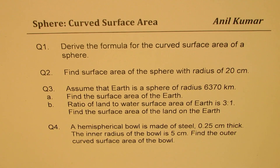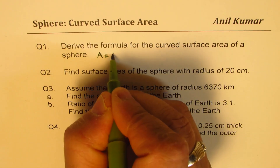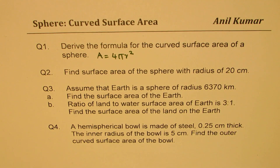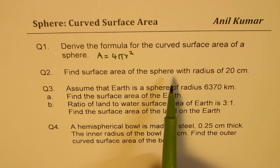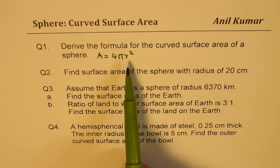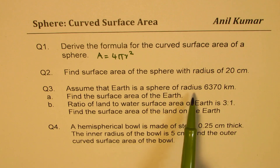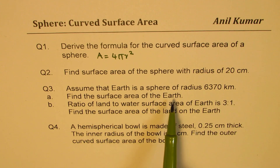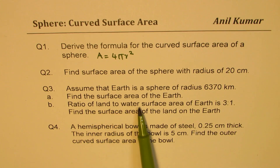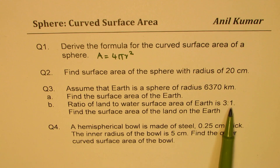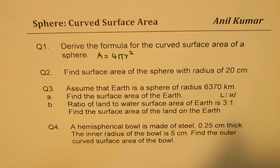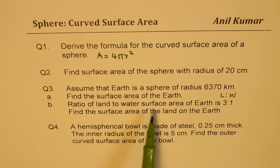The area is 4πr², we know that, but how do we derive it? That is the first question. Question number two: find the surface area of a sphere with radius 20 centimeters — if we are given the radius it is very easy to find the area. Question three: assume that Earth is a sphere of radius 6370 kilometers, find the surface area of the Earth, and also find the ratio of land to water surface area, which is 3 to 1.